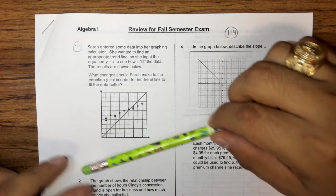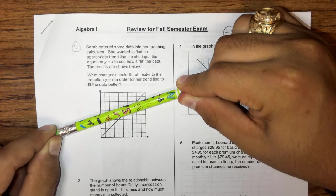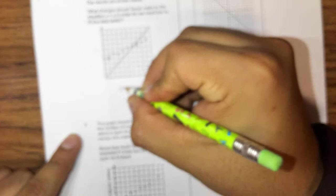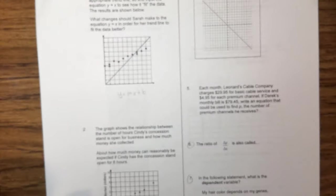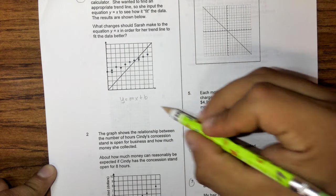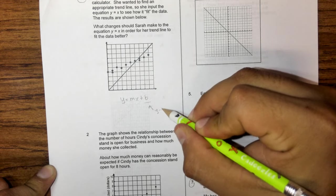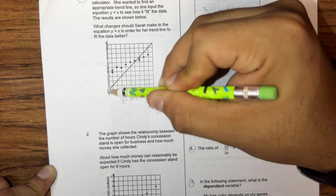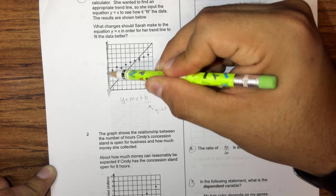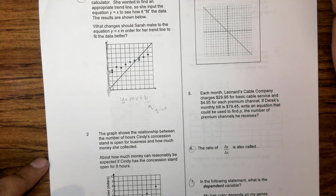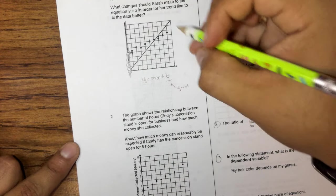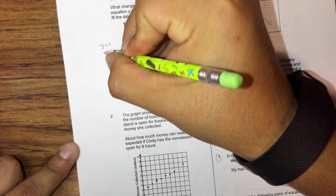What changes should Sarah make to the equation y equals x in order for her trend line to fit the data better? So as you can see, it doesn't really fit very well. A better fit for that line would be, or that trend would be that line right there. So we have to figure out how do we go from that line to that line. Anytime that we're talking about lines, remember that we're talking about y equals mx plus b. So we're going to go ahead and start with our b. So b, that stands for my y-intercept.